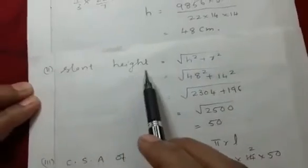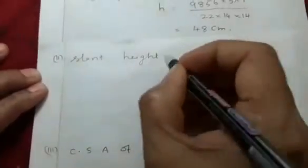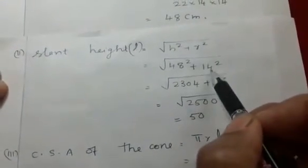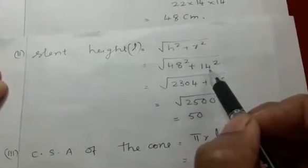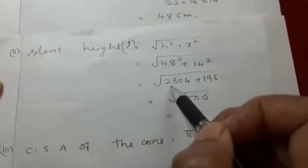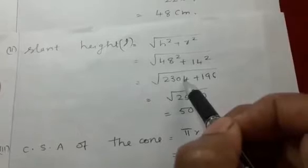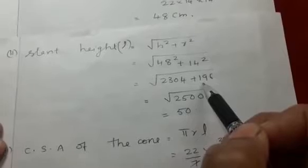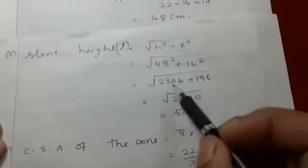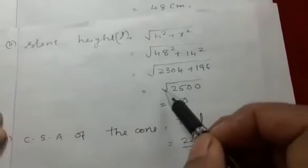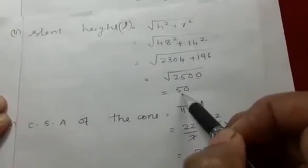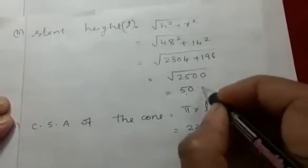Now we have to find out the slant height. You know the formula: slant height L = √(h² + r²). Here h = 48 and r = 14. So √(48² + 14²) = √(2304 + 196) = √2500 = 50. So slant height is equal to 50 cm.